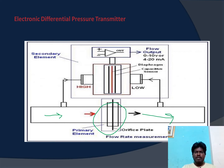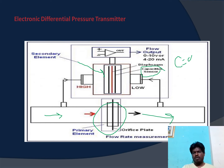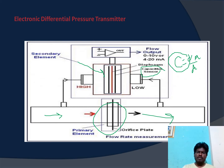The second element is the capacitive sensor. We know that capacitance C is given by epsilon times A divided by d. Whenever any one of these parameters changes, it changes the capacitance. In this capacitive sensor, it consists of two plates and in between there is a diaphragm.